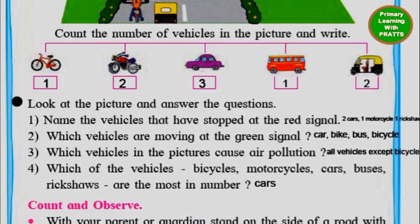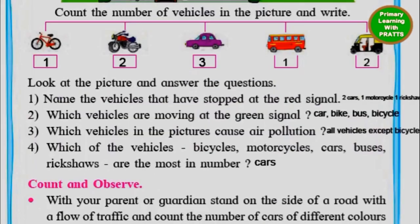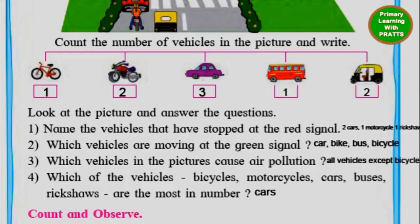Let's answer the questions — write the answers in your notebook as there isn't enough place here. Name the vehicles that have stopped at the red signal. The vehicles that have stopped are: two cars, one motorcycle, and one rickshaw.